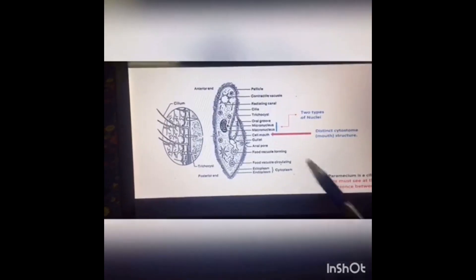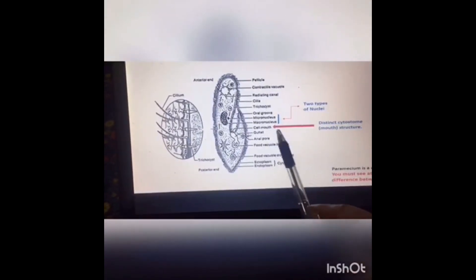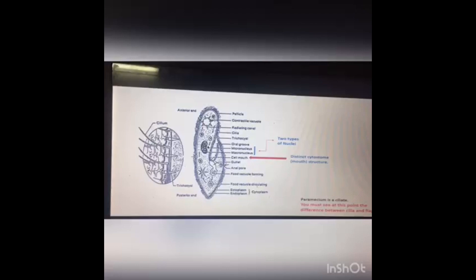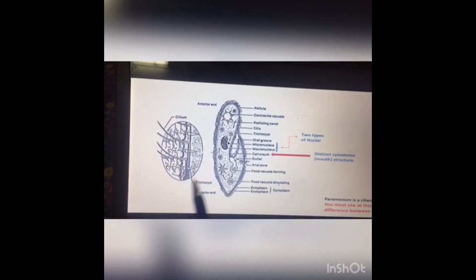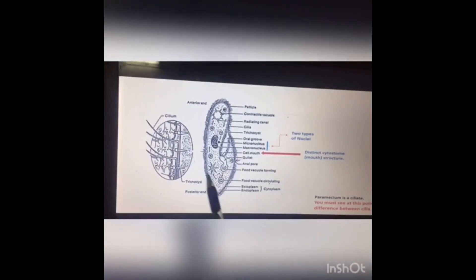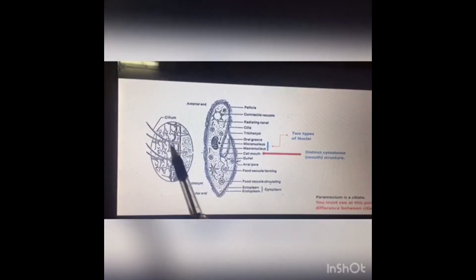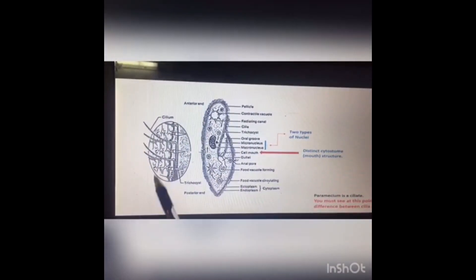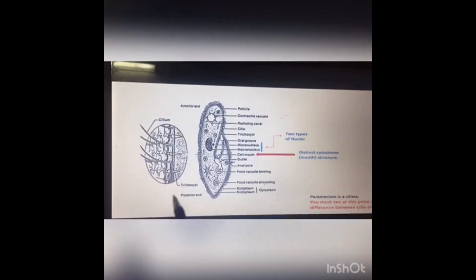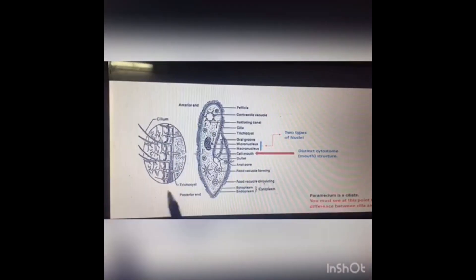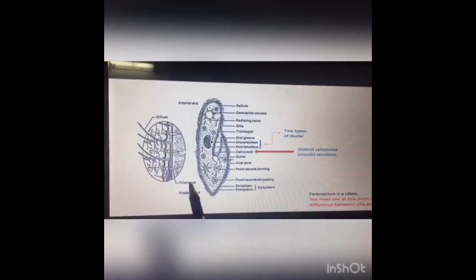After that, you can see the mouth structure — the cytostome structure is distinct, and we can see it in the diagram. This is enlarged by the cilium. The cilium is at the base of the plasma membrane, and the inner structure visible is the trichocysts.